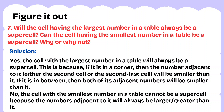Question 7: Will the cell having the largest number in the table always be a supercell? Can the cell having the smallest number be a supercell? Yes, the cell with the largest number will always be a supercell, because all adjacent numbers are smaller than it. For the second question, the answer is no — the cell with the smallest number cannot be a supercell because the number adjacent to it is always larger than it.